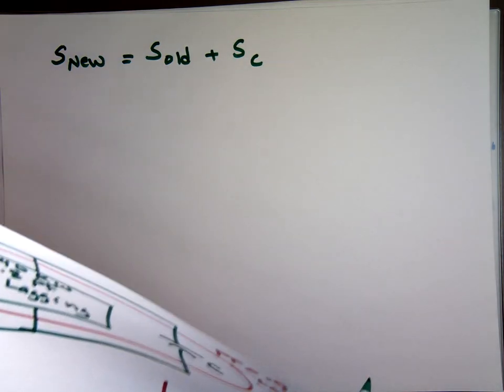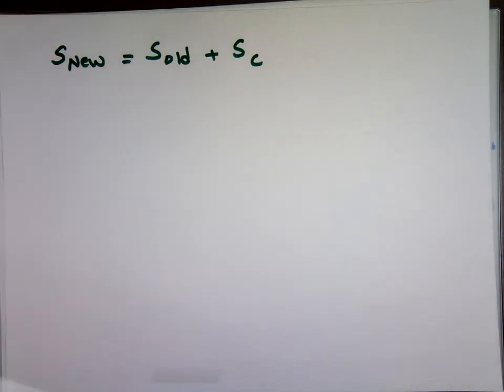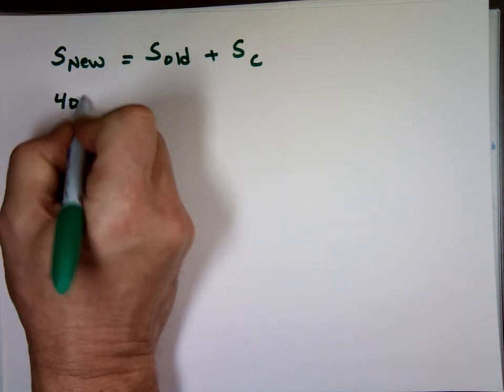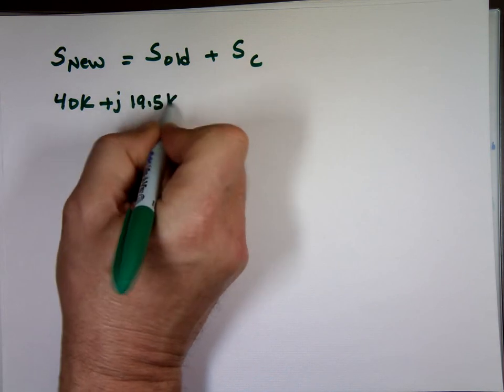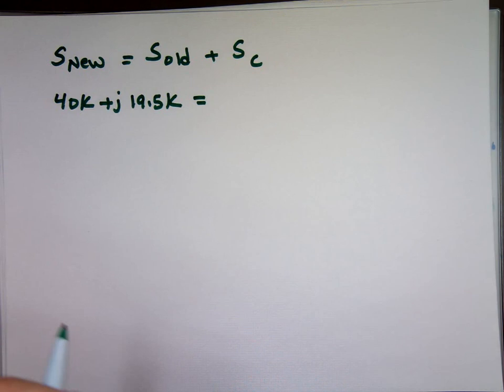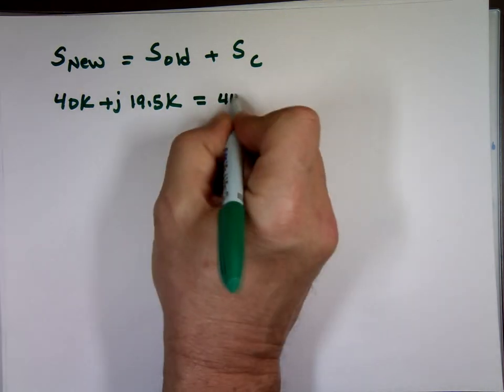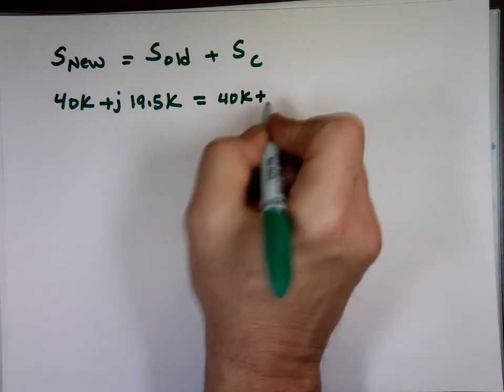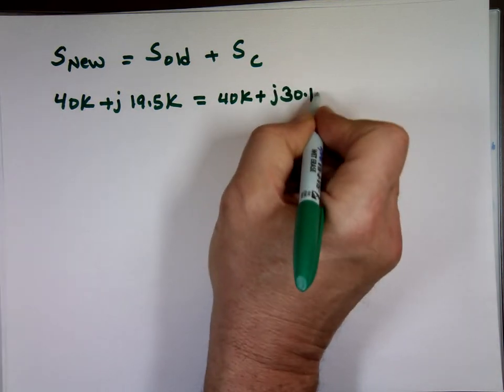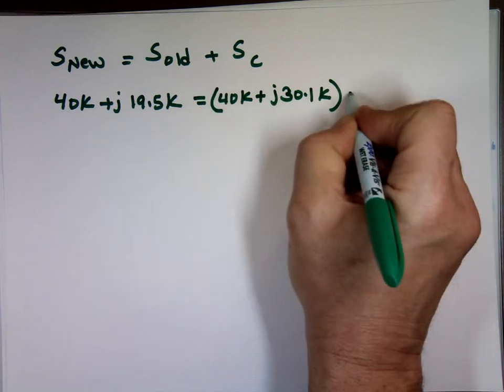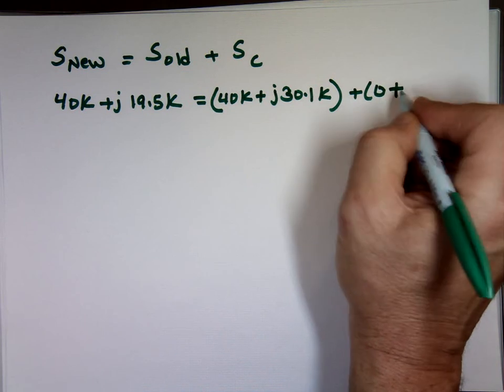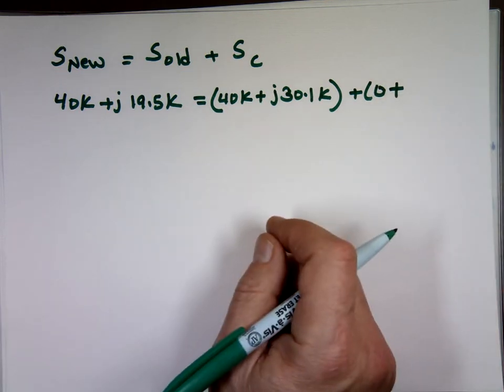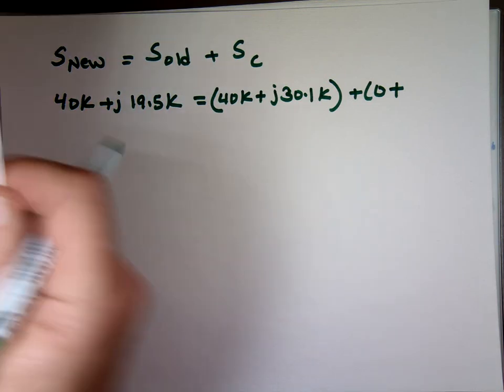The new S, S nu equals S old. That's S for this plus S for that. Well, this doesn't have a real portion, but let's do it. So S nu equals S old plus S for the capacitor. What's S nu? S nu, where is it? Here we go. 40k plus J 19.5k equals S old. Where's my S old? 40k plus J 30.1k plus S for the capacitor, which is zero. The real portion is zero plus the imaginary portion. And we'll leave what that is for now. We'll call it QC.